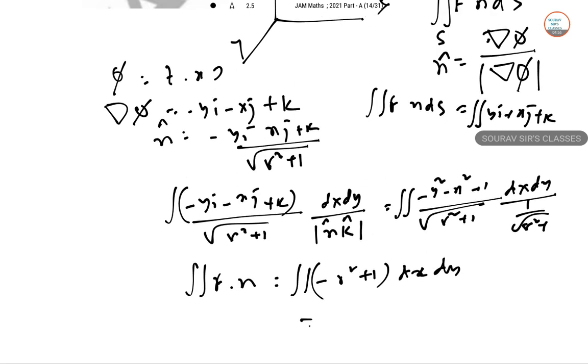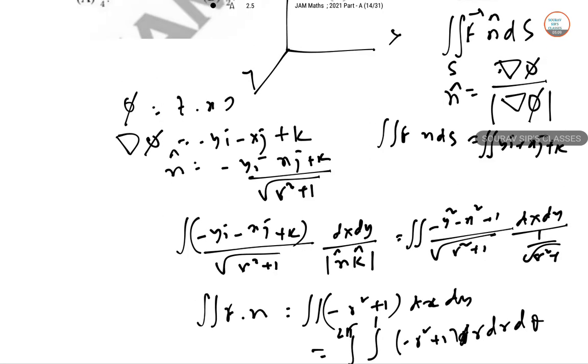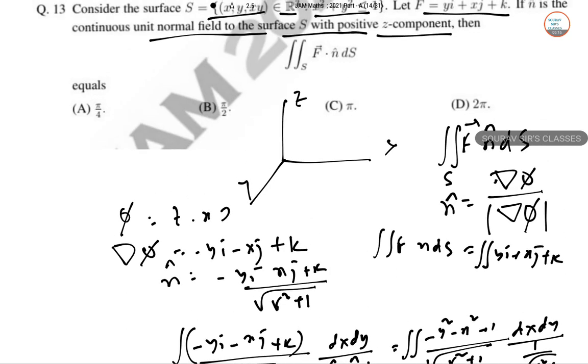So we can calculate this 0 to 2 pi theta and R equal to 0 to 1, minus R square plus 1, R dR dtheta. So now if you put these all together, this value will give you pi by 2. So the answer to this question is pi by 2. So B.